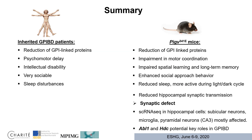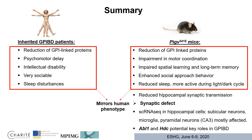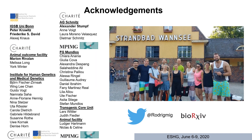In summary, we generated a mouse model for GPI-Anchor deficiency with a patient-specific mutation that mirrors the human phenotype. We observed for the first time reduced hippocampal synaptic transmission not previously described in humans, indicating that GPIBD is a synaptopathy. In single-cell RNA sequencing, subicular neurons, microglia, and pyramidal neurons of the CA3 region were most affected in terms of differentially expressed genes, and ABL1 and HDC emerged as potential key players in GPIBD. I want to thank all my colleagues and collaborators, and the bioRxiv article for this study is available via my Twitter profile.